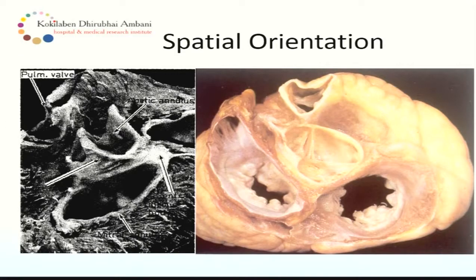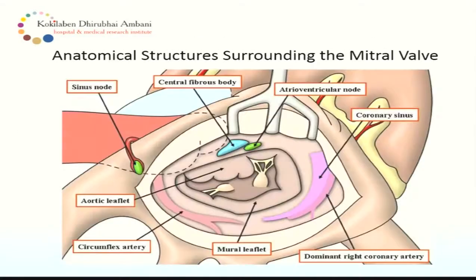This picture shows the fibrous skeleton of the heart, how the heart valves are arranged. The fibrous skeleton — shown in white — gives an orientation of how all four valves are spatially arranged, which is very important for us to know.